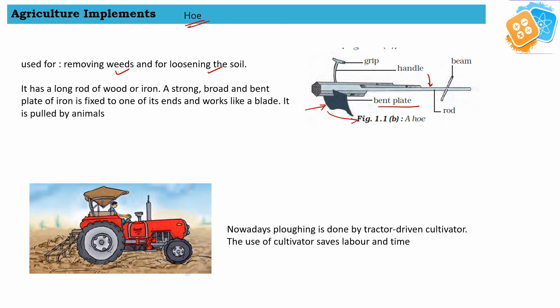The third tool is cultivator. Nowadays plowing is done by a tractor-driven cultivator, and the use of cultivator saves labor and time. As we can see, the tractor is being used for plowing and cultivation.